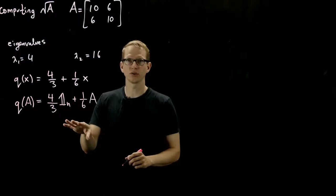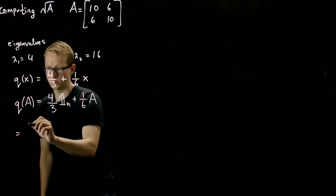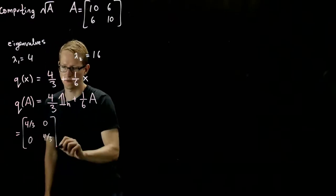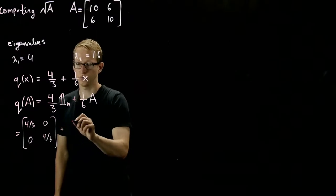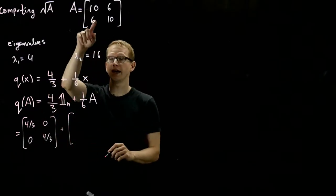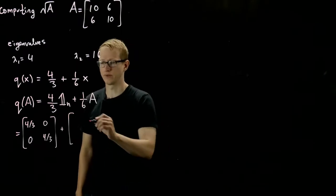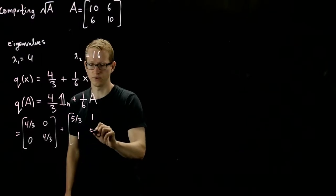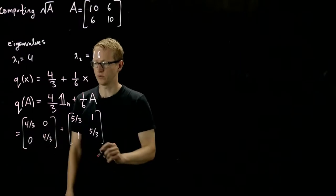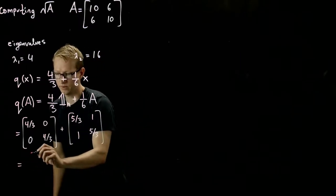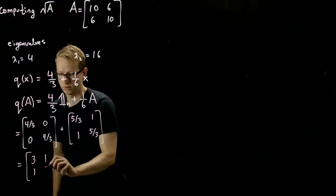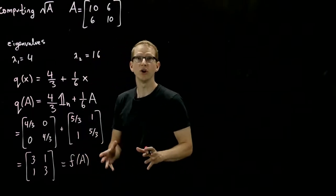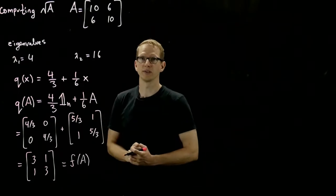So let's see what happens when we actually compute this. We have 4/3 of the identity along the diagonal, plus 1/6 of our matrix A, so it's 10/6 which is 5/3, 1, 1, 5/3. And if we add these two matrices, we get 9/3 which is 3, 1, 1, 3, which is exactly what we found for F of A before. So we already know that when we square this matrix, we get exactly our matrix A back.